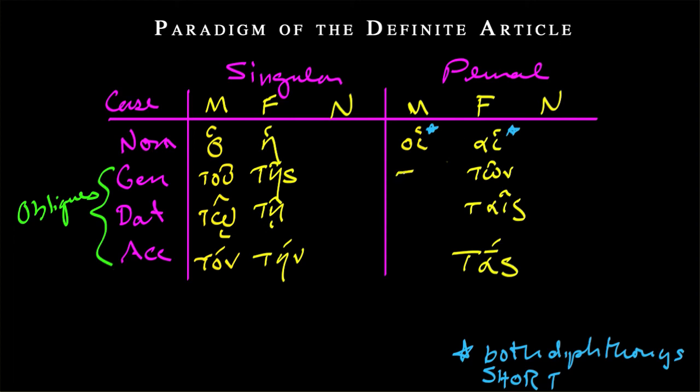All right, and then plural masculine, tōn. So identical in form to the feminine plural. So that's potentially handy. Here, you might have guessed it, tois versus tais. So again, just a difference of diphthong.